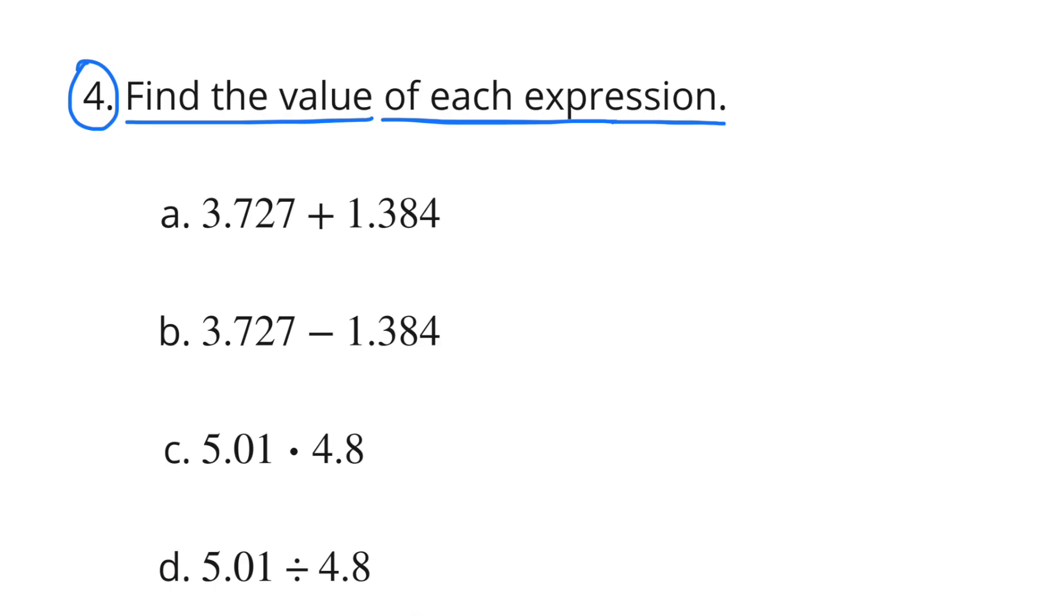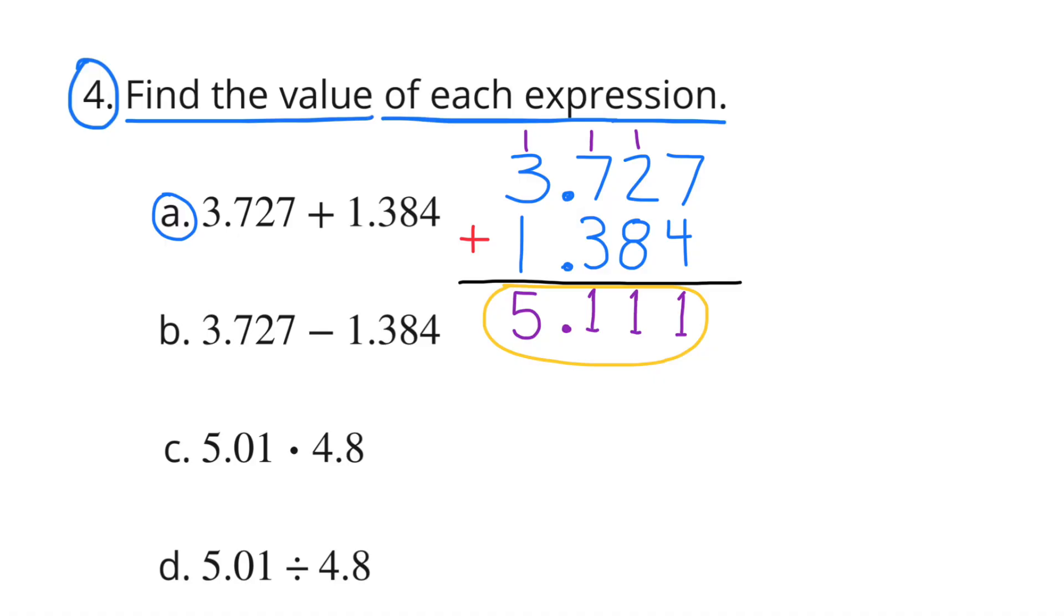Number 4. Find the value of each expression. A. 3 and 727 thousandths plus 1 and 384 thousandths or 3.727 plus 1.384. The sum is 5 and 111 thousandths or 5.111.